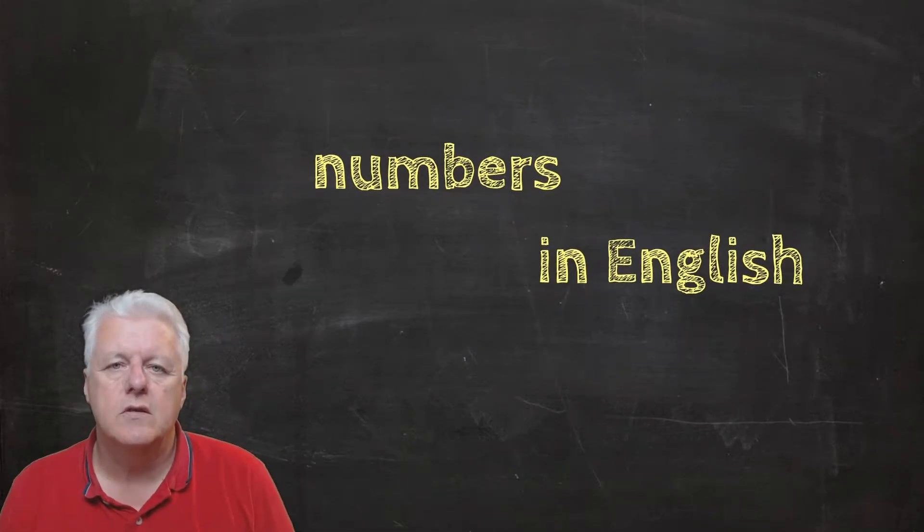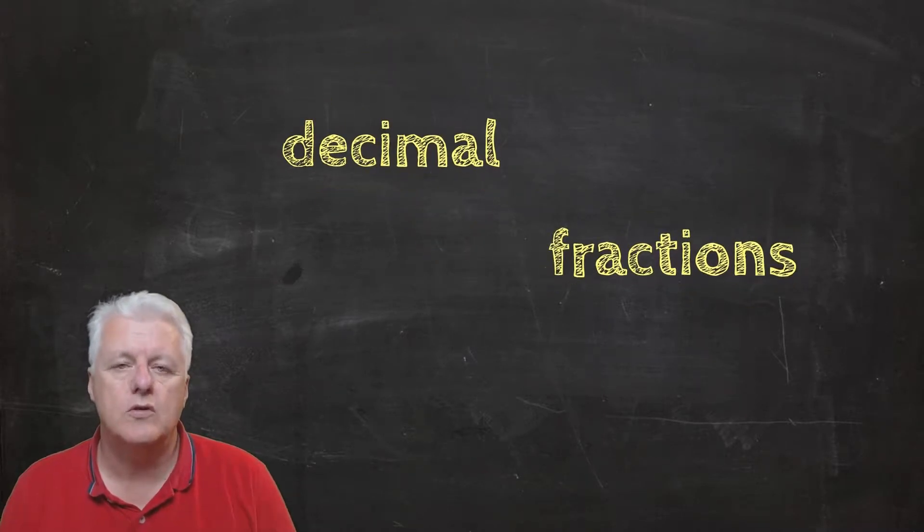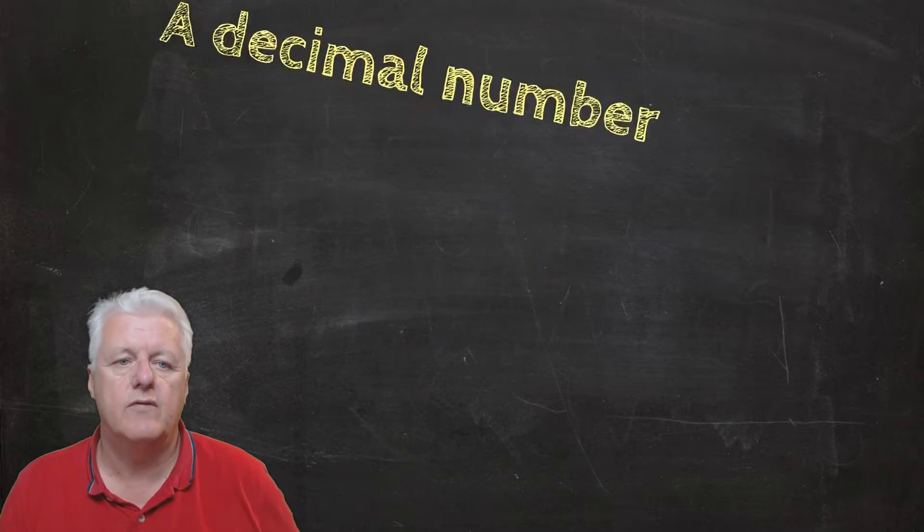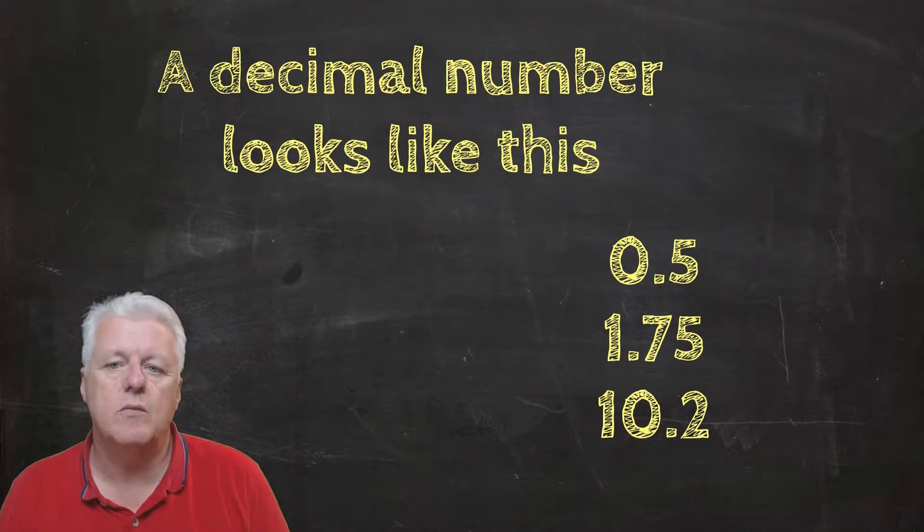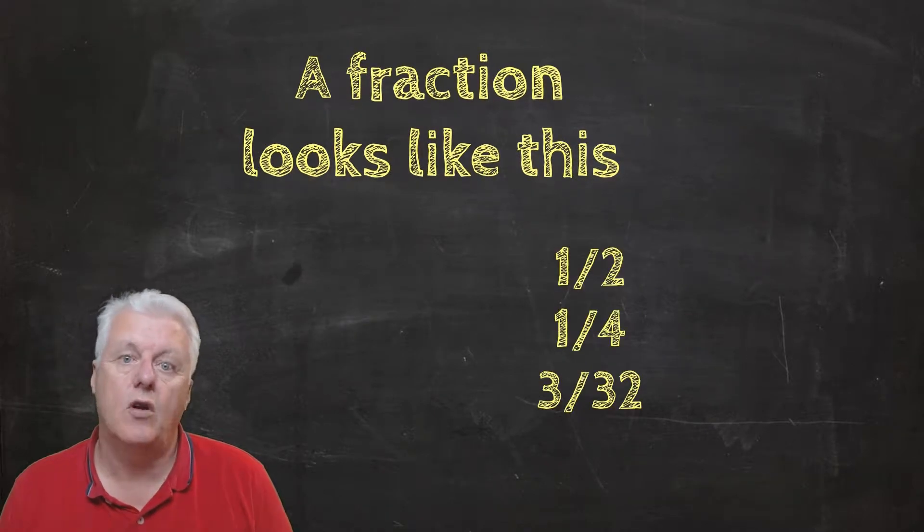So in this short video session we will look at the vocabulary that we use for numbers in English. We'll learn how to say decimal numbers and fractions. A decimal number looks like this, and a fraction looks like this.